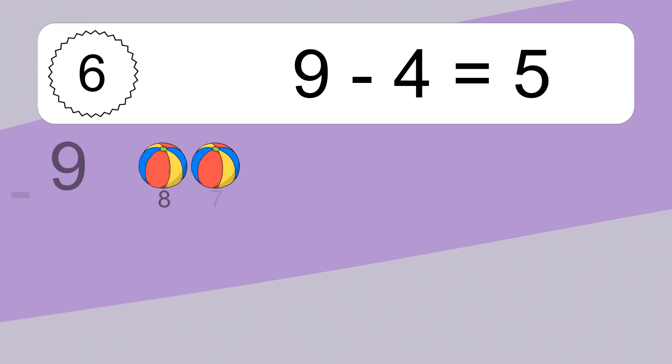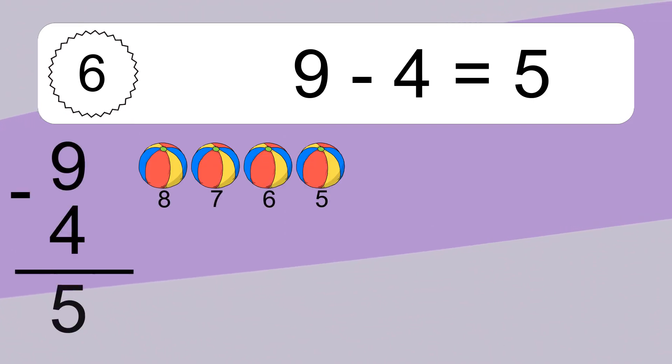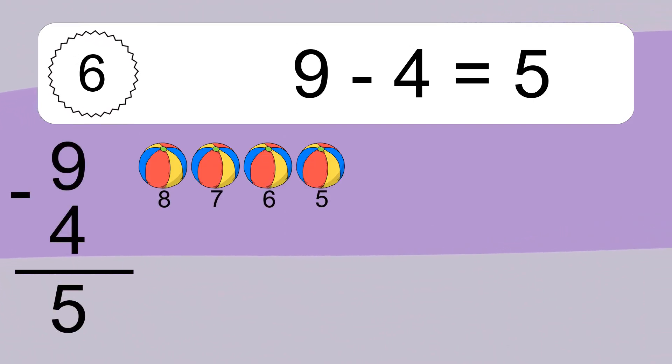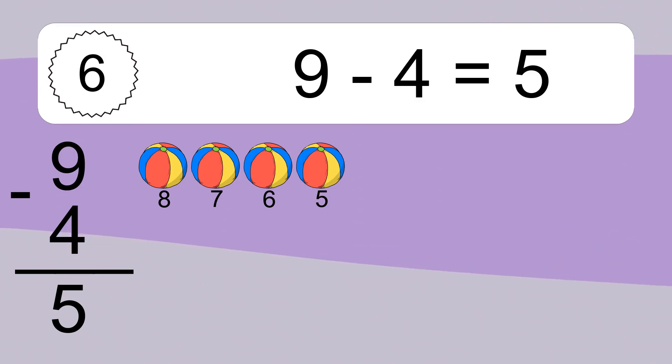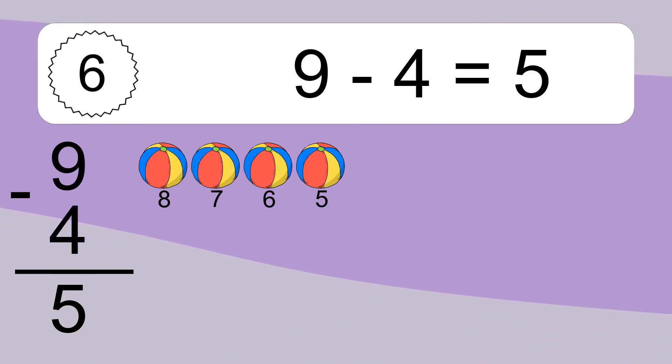9 minus 4 equals what? 9 minus 4 equals 5. Let's count it. 8, 7, 6, 5.